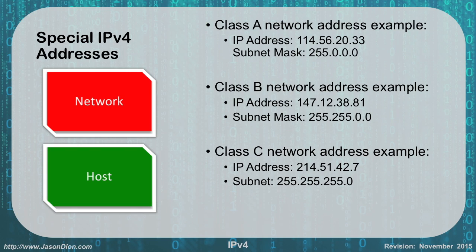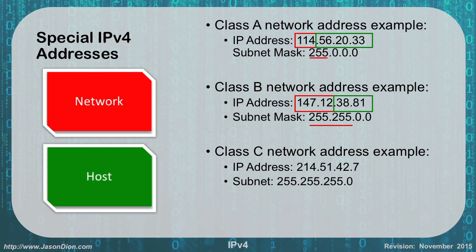When we look at special IP address examples for Class A, B, and C, we want to determine the network portion and the host portion. For the first example, 114.56.20.33 — the network portion is 114 because of the 255 in the subnet mask, and the rest is the host portion. For Class B, with 255.255 in the mask, the network portion is the first two octets — so 147.12 — with the remainder as host. For Class C, with three 255s, the network portion is 214.51.42 and the host portion is the .7.